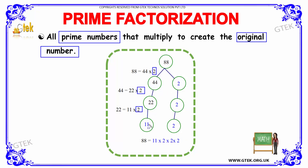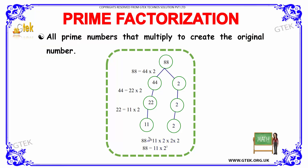So 11, 2, 2 and 2 are the prime numbers which can be multiplied to get 88. The three 2s are simplified as 2 cubed, so 11 into 2 cubed equals 88. Since the factors are prime numbers, this factorization is said to be Prime Factorization.